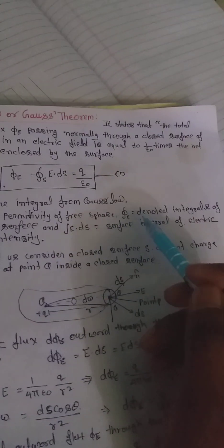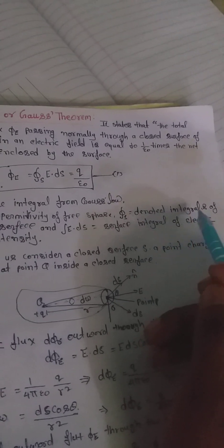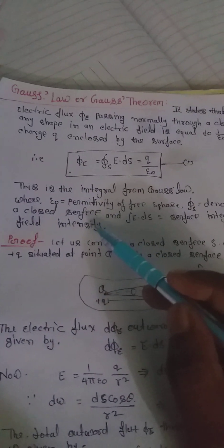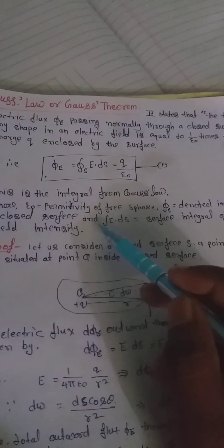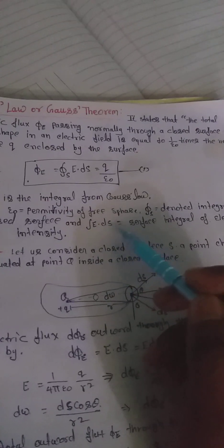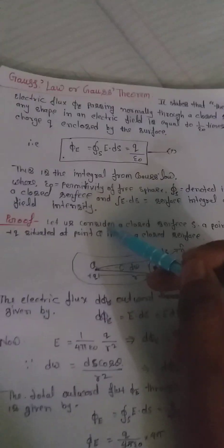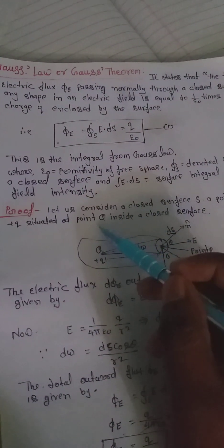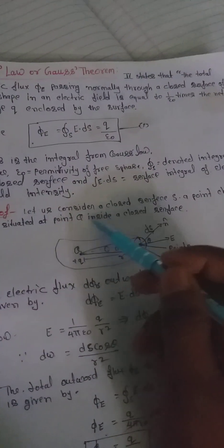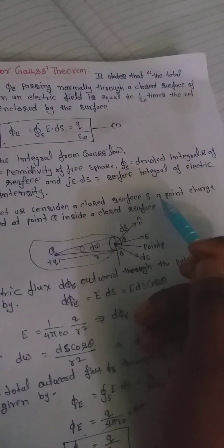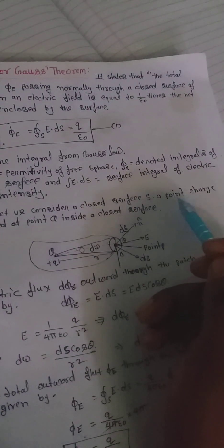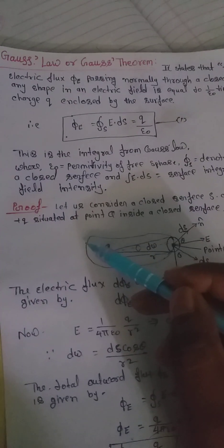The surface integration is denoted by the integral over a closed surface, and ∮E·dS equals the surface integral of electric field intensity. For the proof, let us consider a closed surface with a point charge +q situated at a point.